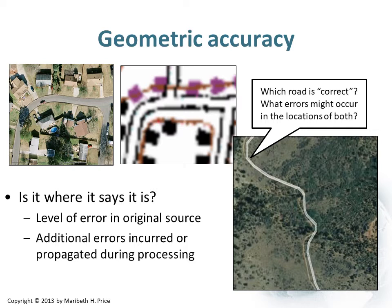Is the photo newer than the other data set? Was there ever a road there? You don't have any way of knowing just from looking at it. But if you investigate further, you might look at when the data was created and when it was updated, and you might find that the aerial photos are newer or older than the other layer — that is the digital raster graphic.